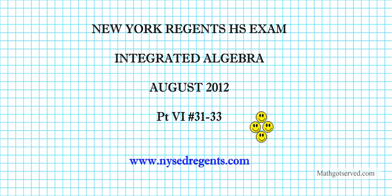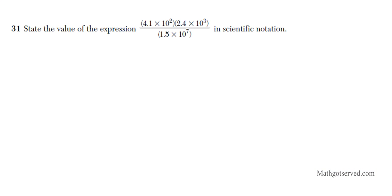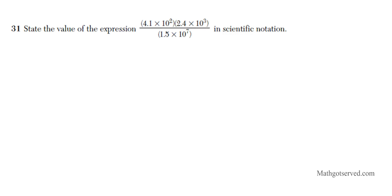Let's go ahead and take a look at question 31. It says state the value of the expression 4.1 times 10 squared times 2.4 times 10 to the third, over 1.5 times 10 to the seventh power. I'm going to do this problem in two different ways. Remember, you can use a calculator for this question, but in order to ensure you get full credit, you have to show work.